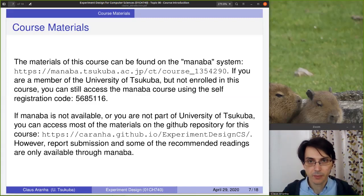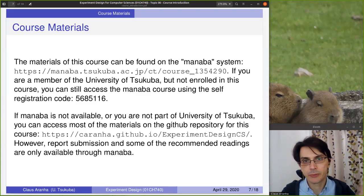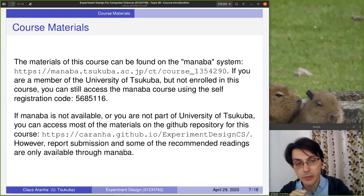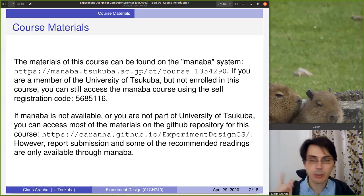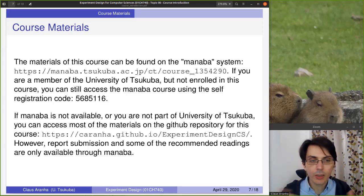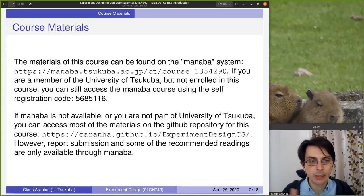The materials of this course can be found in the MANABA system. If you are a member of the University of Tsukuba, you can access this. If you are enrolled in this course, you can access the link automatically. If you're not enrolled, you can access using the self-registration code on the screen. If you are not a student at the University of Tsukuba, you can access the material using the GitHub link shown below. Almost all of the material is on the GitHub link, though there are a few papers and reports that are not publicly available.